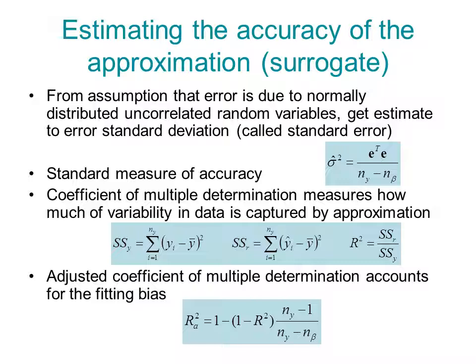The square of that coefficient is a measure of how much of the variability in the data is captured by the approximation. So if they take variables like income and age and try to fit voting preferences based on that, if they measure a coefficient of R square equal to 0.6, it means that 60% of the variability in voting is captured by the surrogate that depends on age and income.